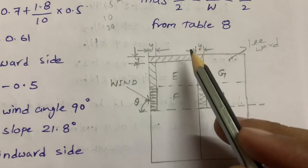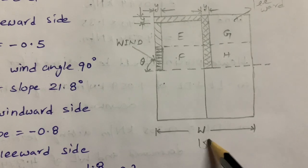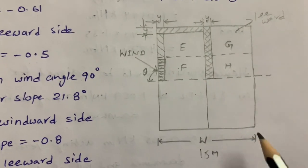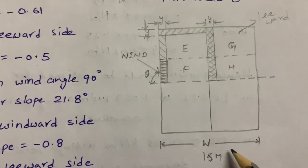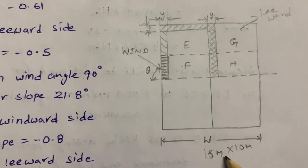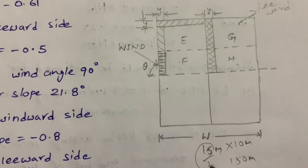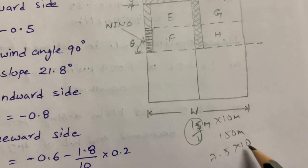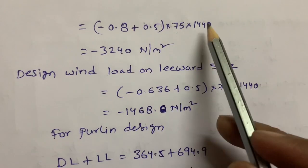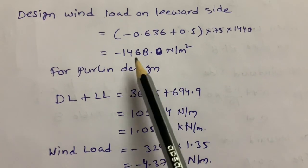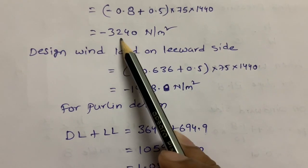For the area calculation, the span of the truss is 15 meters so half the distance is 7.5 meters, and height of the building is 10 meters. Area A = 7.5 × 10 = 75 m². Substituting all values, I get −1468 Newton per meter square for the leeward side and −3240 Newton per meter square for the windward side.